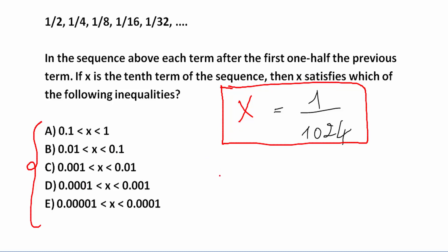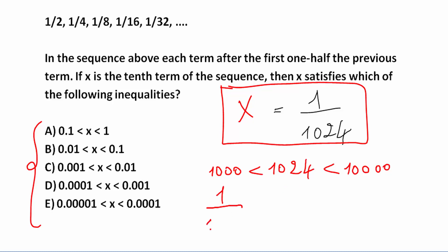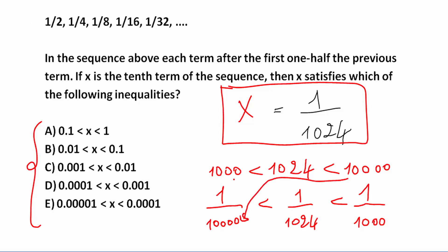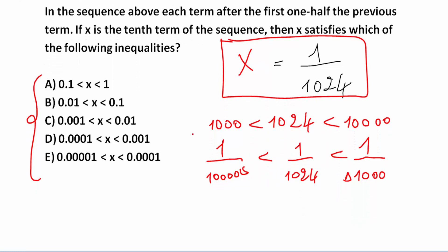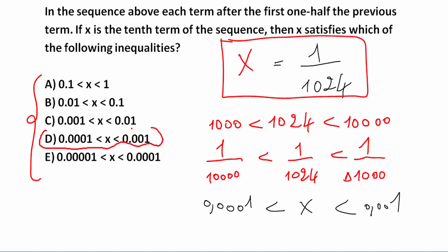Now I know that 1000 < 1024 < 10,000. Using basic rules of inequalities, I can write: 1/10,000 < 1/1024 < 1/1000. That gives us 0.0001 < x < 0.001. So x is between 0.0001 and 0.001, and the answer is clearly D.